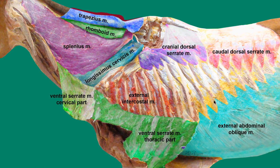Caudally from the ribs, extending to the linea alba and to the inguinal ligament, we can see a very large muscle — the external abdominal oblique muscle. Now let's move to the dissection.